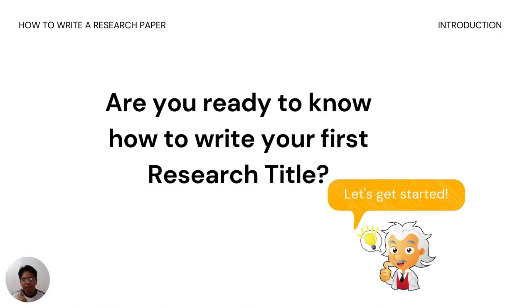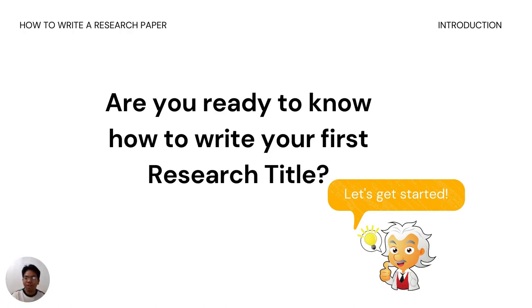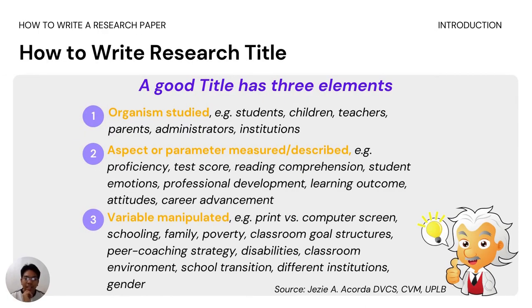You would be fulfilled once you were able to reach and pursue your goals. Now, are you ready to know how to write your first research title? The first thing that is very important is to get your topic, know your topic, and then make a title out of it. A good title has these elements: number one, your organism; number two, your parameter; number three, your variable.